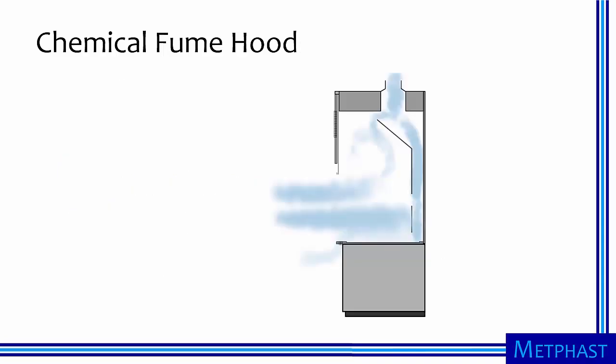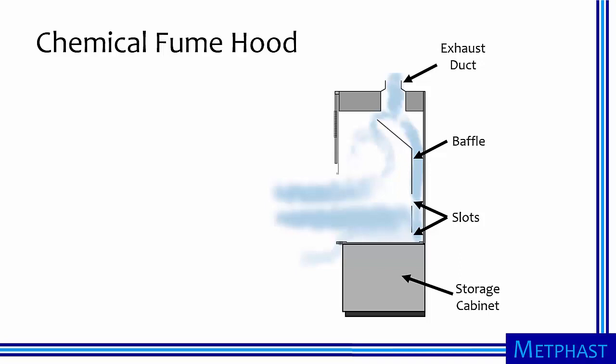Chemical fume hoods are an important class of enclosing hood. Shown here in side view, air is pulled from an exhaust duct with baffles and slots used to direct airflow. Often, a storage cabinet below the work surface is held at negative pressure for safe storage of chemicals. A sash is used to open and close the hood face, and its position changes the airflow patterns.